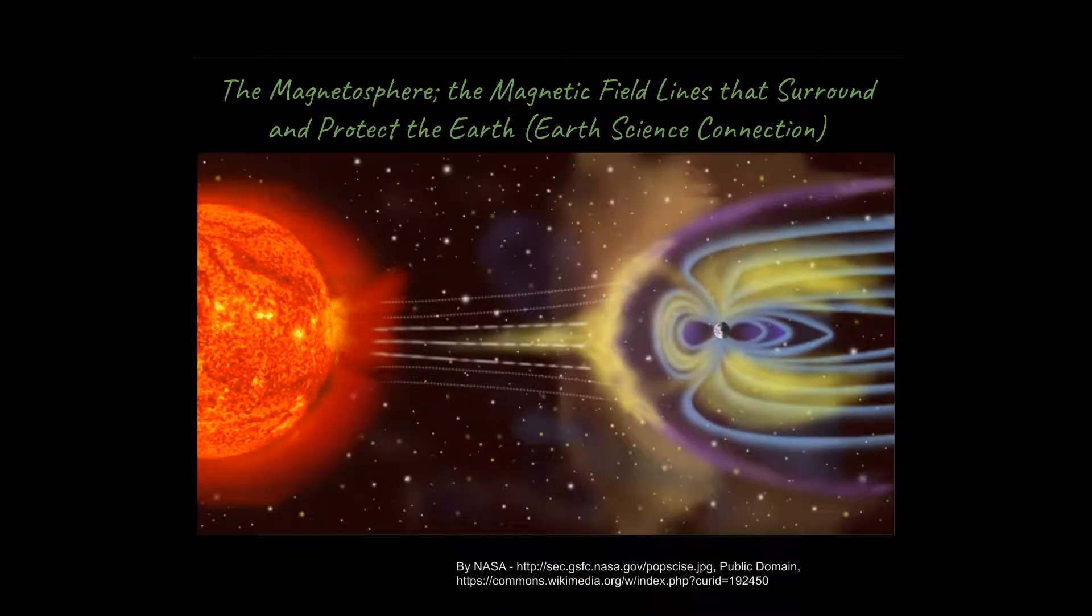So this is called the magnetosphere. This is the magnetic field around the Earth, and you have harmful rays coming in from the sun, and those rays get deflected because of the magnetic field of the Earth. Now they don't get completely deflected. Some of those come in where the magnetic field lines of the Earth come out of the Earth. So this solar wind can come in at this angle and interact with our atmosphere, and that's what an aurora is.